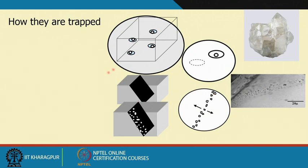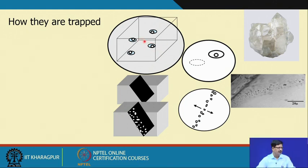Just for recapitulation, this diagram represents the process of primary inclusions. These inclusions are part of the random three-dimensional network. When we take a section and study under the microscope, we see different inclusions getting focused at different planes, compared to fluid inclusions which are aligned on linear arrays — essentially sections of an inclined fracture plane.